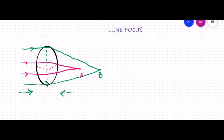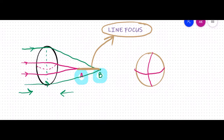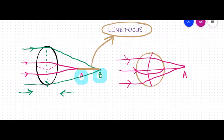So what we understand is that we do not have a single focus from this astigmatic surface. Instead we have focus A and focus B, and the line joining A and B is called the line focus. In an astigmatic surface we get a line focus, not a point focus as we see in a perfect spherical surface. In a perfect spherical surface all meridians are equal, all rays converge to a single point A. But in an astigmatic surface, we have a line focus.